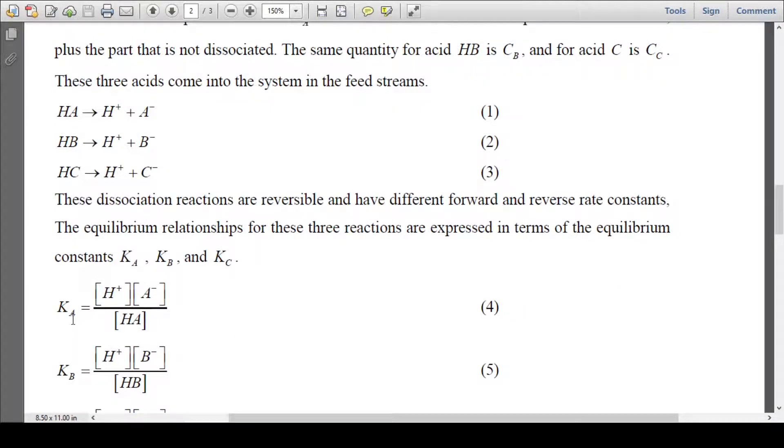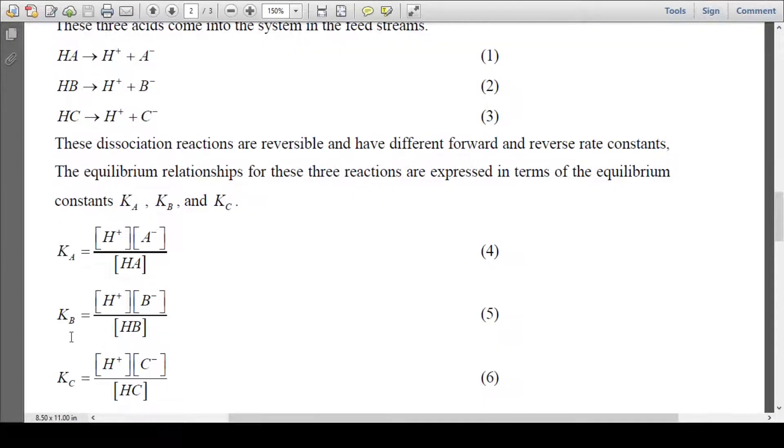We write KA as [H+][A-] upon [HA]. Then for acid HB we have KB equal to [H+][B-] upon [HB]. And then we have KC: [H+][C-] upon [HC]. These are the three dissociation equations.